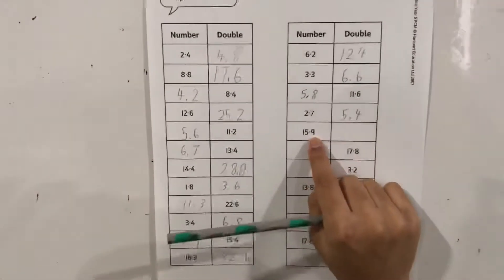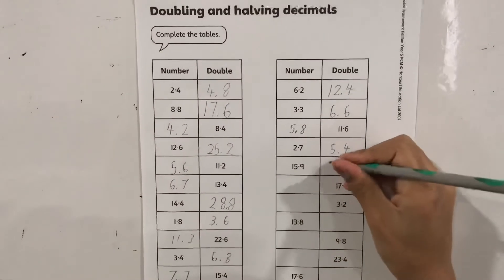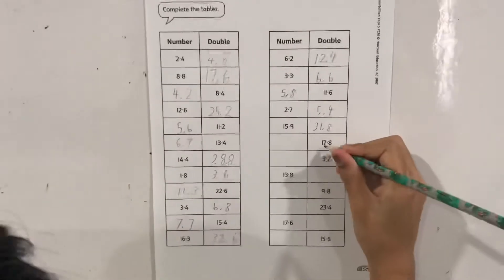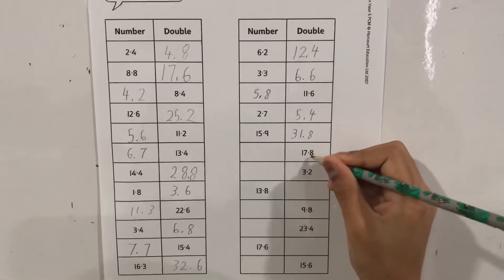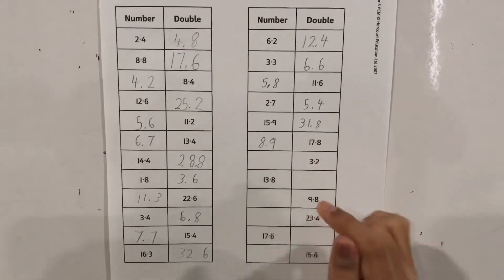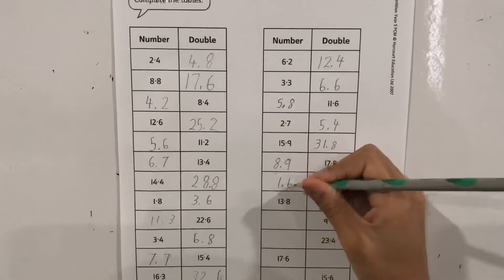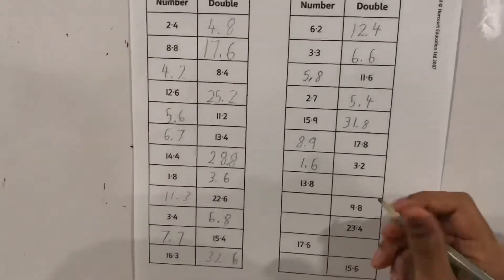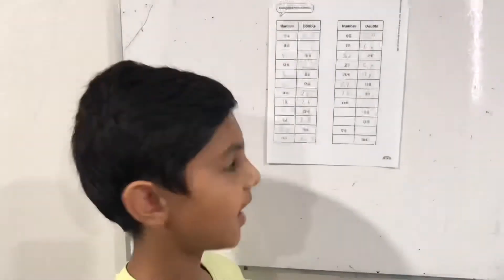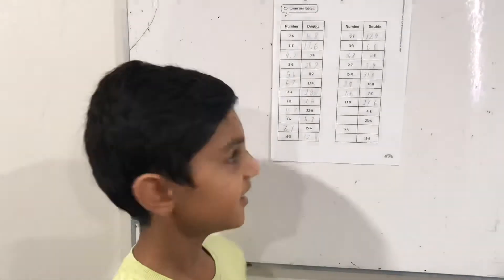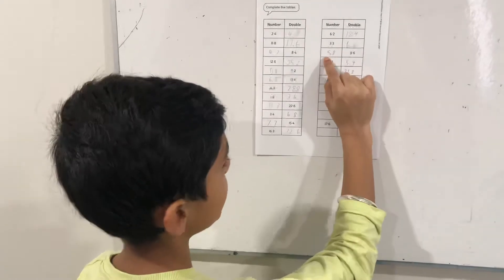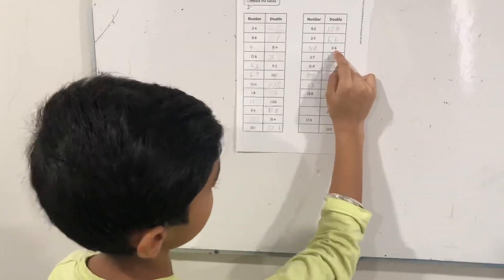15.9 doubled is 31.8 — that's big! 17.8 halved is 8.9, and 3.2 halved is 1.6, and 30.8 doubled is 27.6. Now can you find the half of 27.6? Well it is 30.8. Do you notice how 5.8 doubled is 11.6 and then 11.6 halved is 5.8? They are inverses of each other!